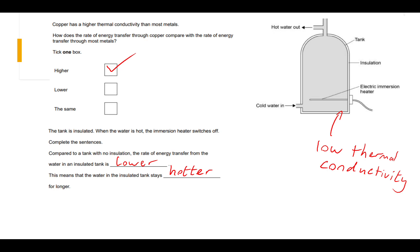That's the entire reason for having insulation on a tank — to keep the water warm. This means we can use the electric immersion heater less, and if we're using less electrical energy to heat the water, then we're going to save money. Hopefully that helped. Thanks for watching, and I'll see you in the next video.